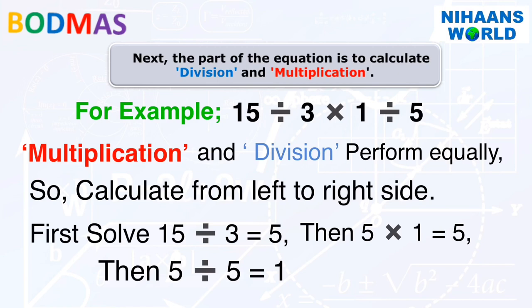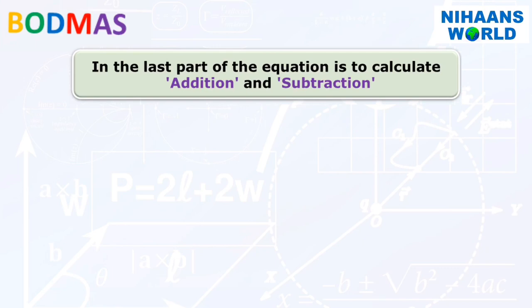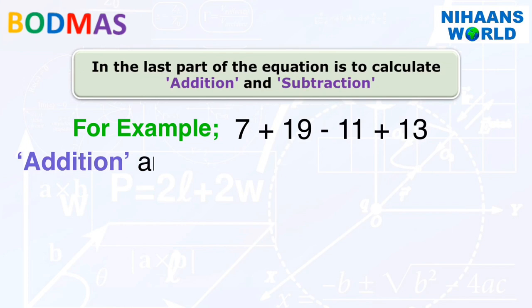In the last part of the equation is to calculate addition and subtraction. We know that when addition and subtraction follow one another, then their order in that part of the equation is solved from left side to right side. For example, 7 plus 19 minus 11 plus 13. Addition and subtraction perform equally, so calculate from left to right side.